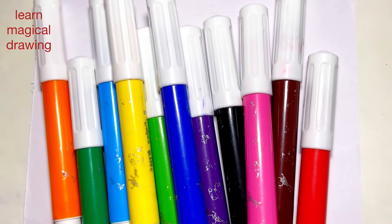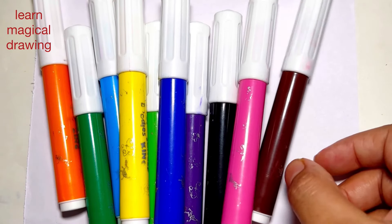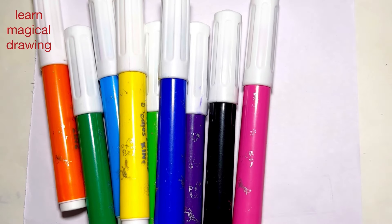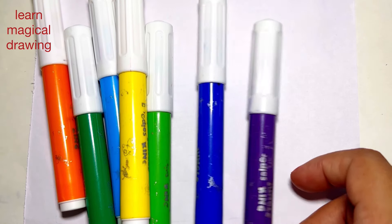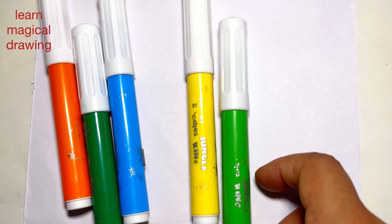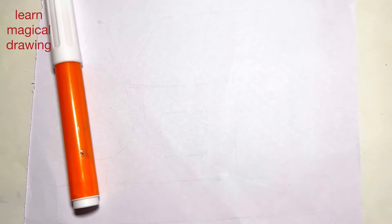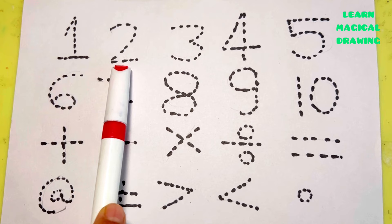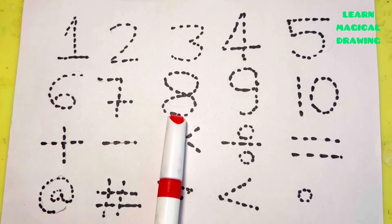Hello everyone, let's learn some colors. Red color, brown color, pink color, black color, purple color, blue color, light green color, yellow color, sky blue color, dark green color, and orange color. One, two, three, four, five, six, seven, eight.